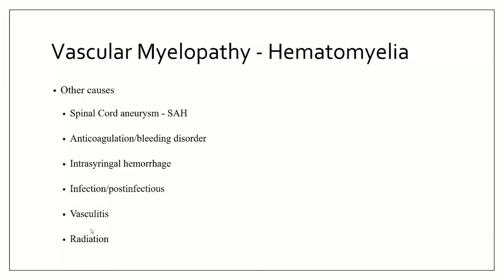Other causes of hematomyelia include spinal cord aneurysm, which can present with subarachnoid hemorrhage; anticoagulation or a bleeding disorder; intrasyringal hemorrhage — if you have a syrinx and bleed into it; infections such as varicella and HTLV; post-infectious complications, especially post-influenza — there's a syndrome called acute necrotizing hemorrhagic encephalitis with a spinal version; and vasculitis or radiation. Many things can cause hematomyelia.